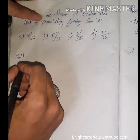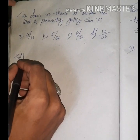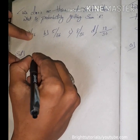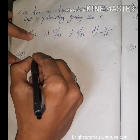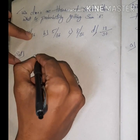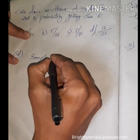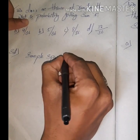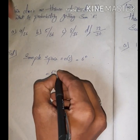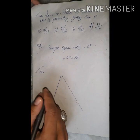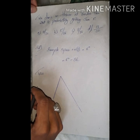To solve this type of question, first we have to find the sample space. Since two dice are thrown, we use the formula n(S) = 6^n = 6^2, which gives us 36. So the total number of outcomes in the sample space is 36.